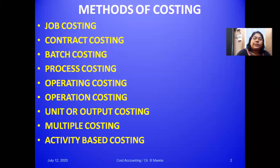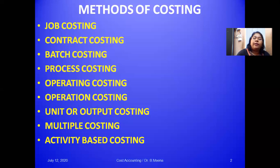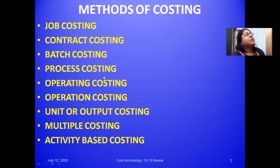The last method is activity-based costing (ABC). ABC is an accounting methodology that assigns cost to activities rather than products and services. Costs are initially assigned to activities based on the resources used, then the costs are absorbed by products and services based on the use of those activities. These are the methods of ascertaining costs.